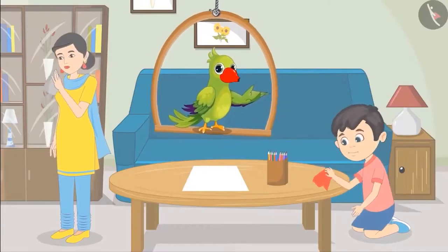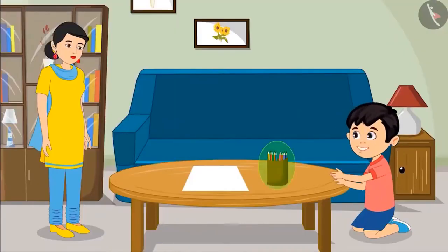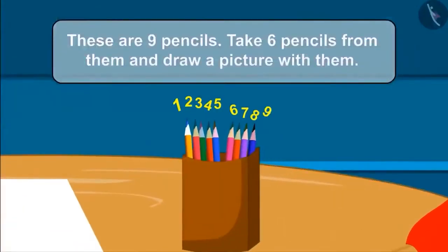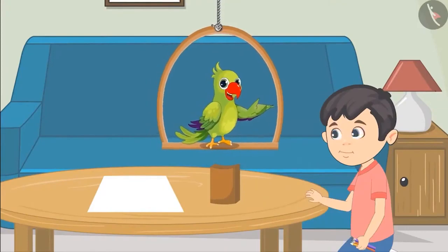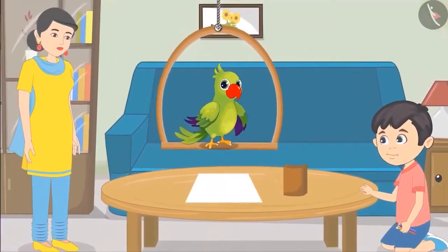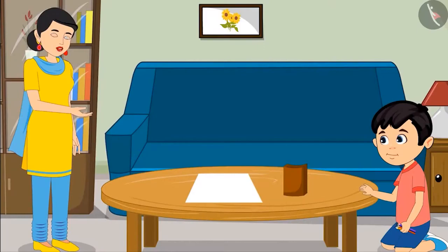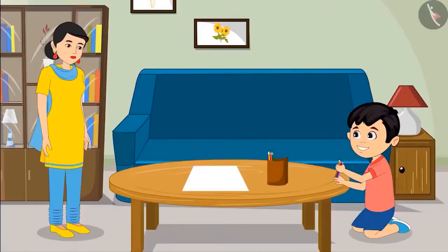While cleaning, Chotu finds a box of nine color pencils and wants to draw a picture. His mother says: take six pencils from them. Chotu takes all the pencils. Children, did he take six or more or less? His mother says he took all of them — he should take only six. Chotu counts again: one, two, three, four, five, and six. Is it okay now, mom? Yes, son, very good. Now make the drawing.